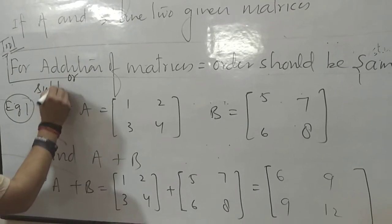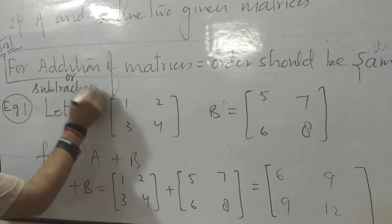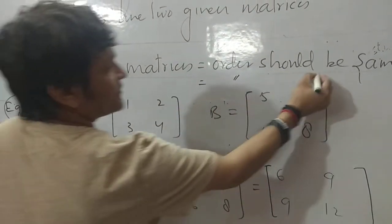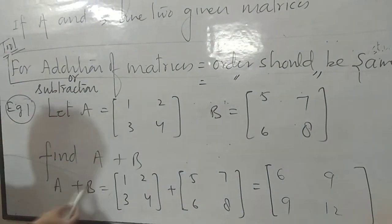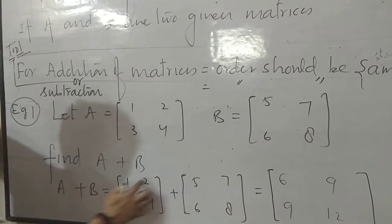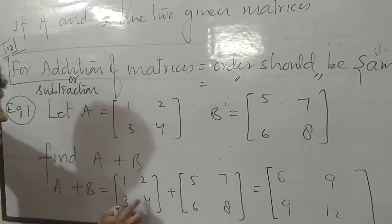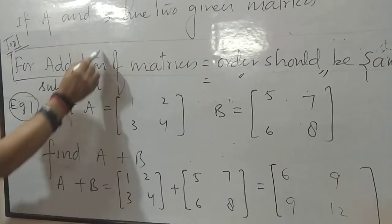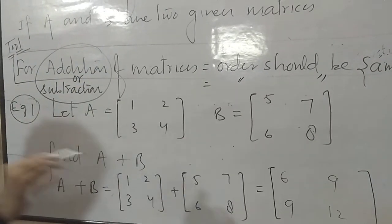Subtraction. Order should be same. Now suppose he is saying A minus B. No problem in this. 1 minus 5, 2 minus 7, 3 minus 6, 4 minus 8. So both addition and subtraction I have covered in these two things.